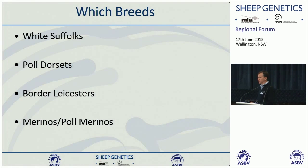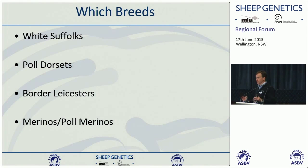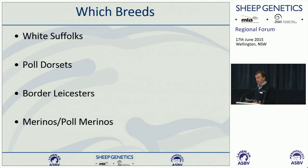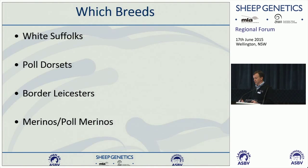Which breeds are genomic tests available for? To do this we need to have big reference populations. We can currently do it for breeds where we have those big reference populations — White Suffolks, Poll Dorsets, Border Leicesters, and Poll Merinos. We're working on ways to do better across-breed predictions so we can start including smaller breeds and collecting reference population information for those breeds, but that's a work in progress.